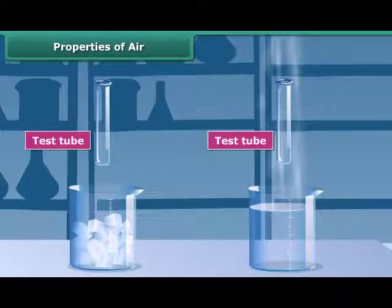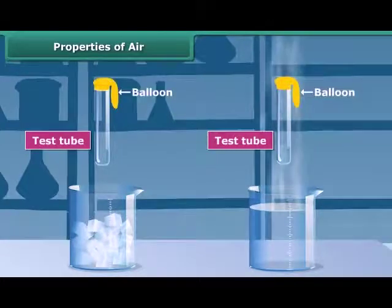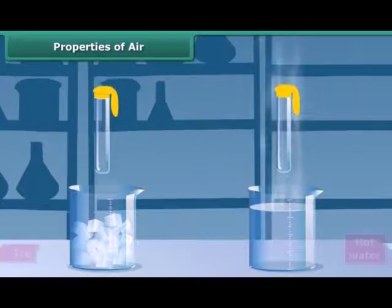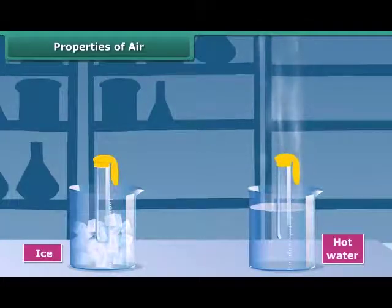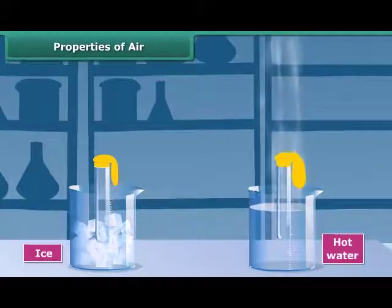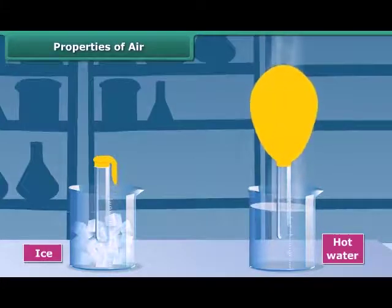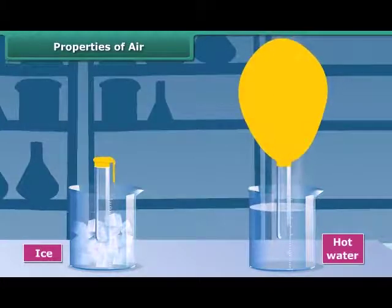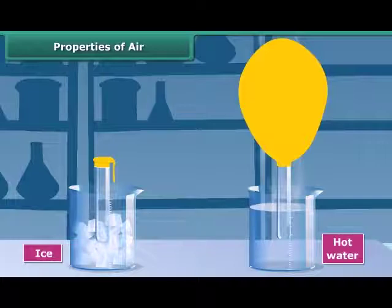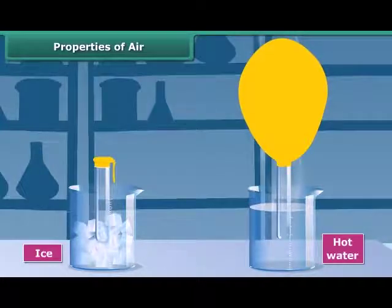Now take two empty test tubes and place a balloon over the mouth of each bottle. Put one test tube in a pan of hot water and the other one in a pan with ice. Observe carefully. The balloon on the test tube in hot water begins to inflate. This is because the hot water heats the air inside the test tube and the ice cools the air in the other. When air gets warm, it expands and rises, which inflates the balloon. On the other hand, cool air contracts, causing the other balloon to shrink.